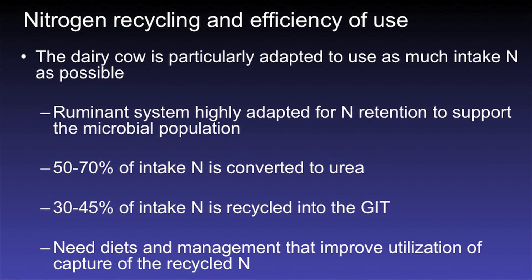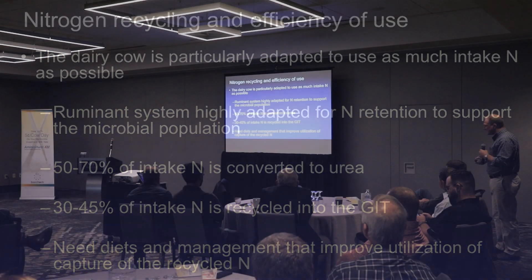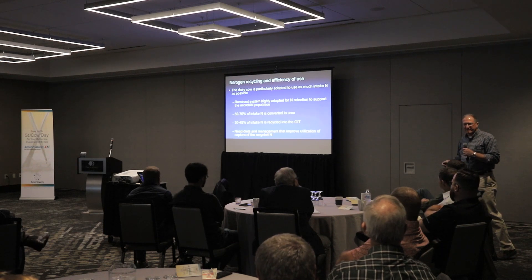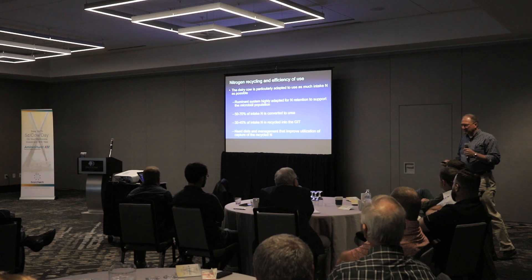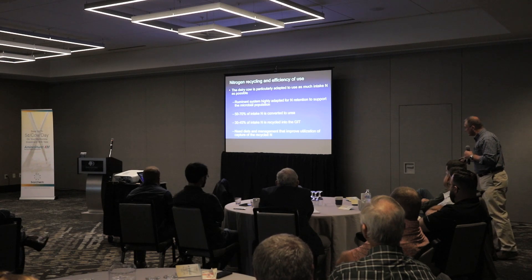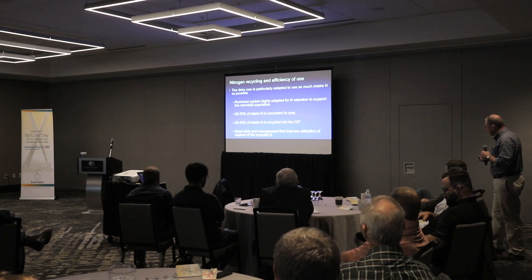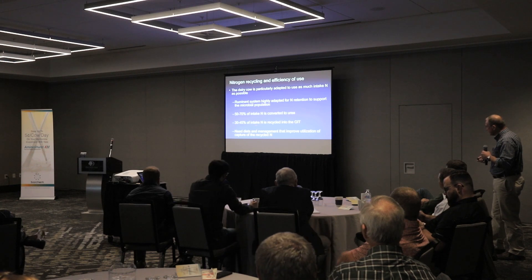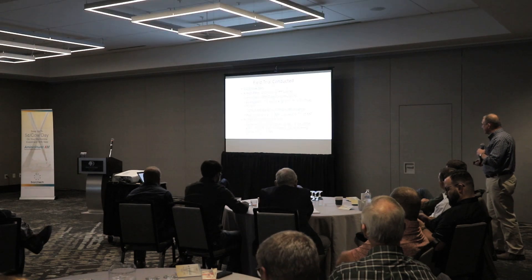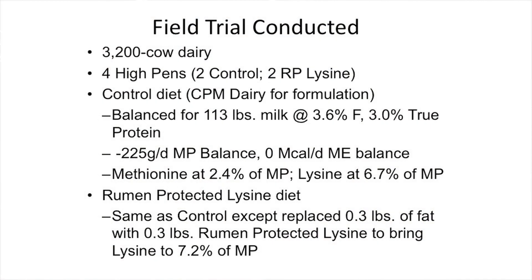The cow is really adapted at doing this — she wants to maintain nitrogen retention and support the microbial population. About 50% to 70%, if you look at all the data, of intake nitrogen is converted to urea. For somebody who balances for amino acids, that should scare the pants off you — it's a lot of amino acids being converted to ammonia. But she interconverts it, and 30-45% of that intake is recycled back to the gastrointestinal tract. We can modify this — that's how we improve efficiency.